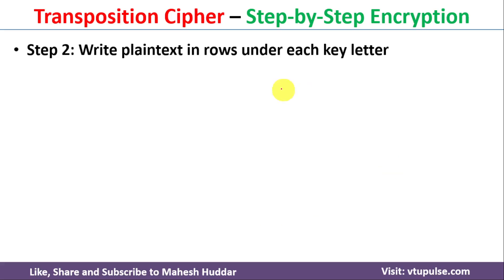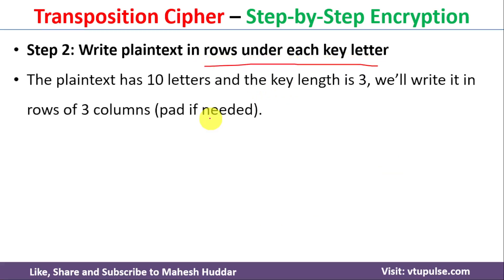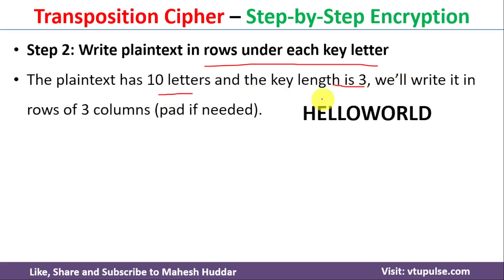In the next step, we need to write the plain text in rows under each key letter. We have 10 letters in the plain text and the length of the key is 3. We need to arrange these 10 letters under the key letters. Since the length of the key is 3, we need to divide the whole text into groups of 3.